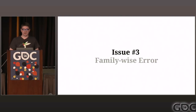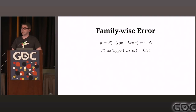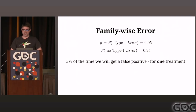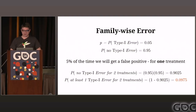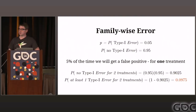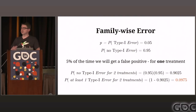The third problem is the family-wise error. If you have multiple treatments, the chances of seeing a false positive increases every time you add a new treatment. For example, with two treatments, your false positive rate for exactly the same test is now up to about 9.75% — it's nearly doubled. And people tend not to correct for that in their A/B tests.